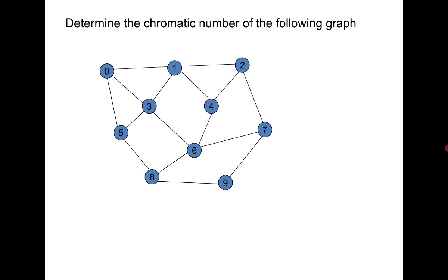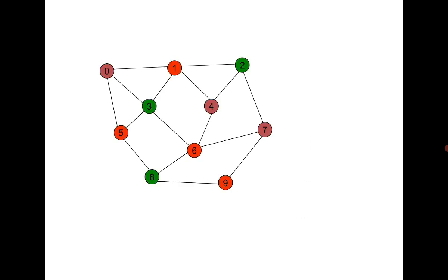Next, try to find the chromatic number of the following graph. We are not studying any formal algorithm — it's simply an exercise. If you claim the chromatic number is 5, you must show it cannot be colored with 1, 2, 3, or 4 colors. For this graph the answer is 3: three colors — brown, orange, and green — are used.